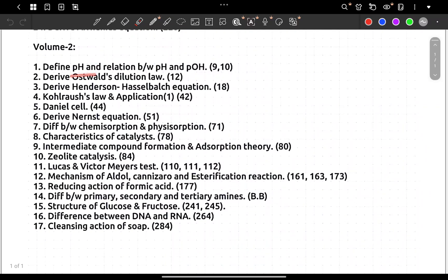Volume 2: Define pH and relation between pH and pOH - this is again Volume 2. Then Ostwald's dilution law, Henderson-Hasselbalch equation and application - first application bookback, so first application. Then Daniel cell important, Nernst equation, difference between chemisorption and physisorption, catalyst at least and anticatalyst.